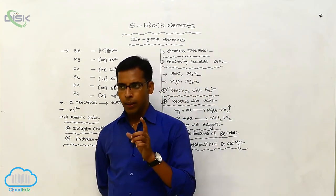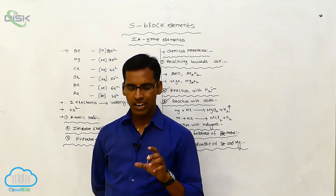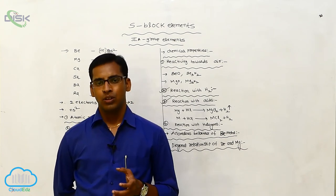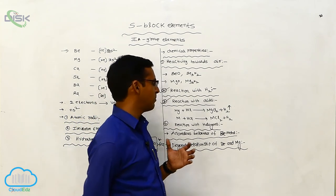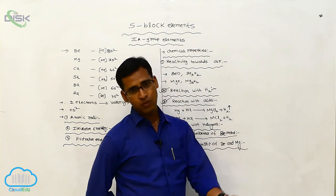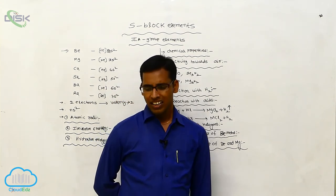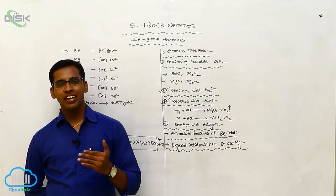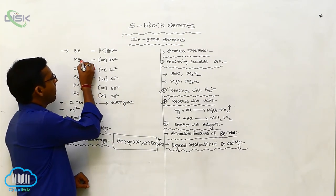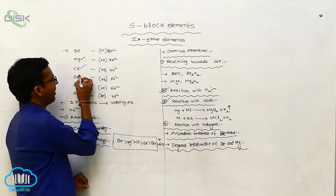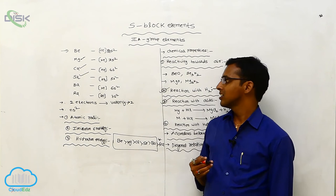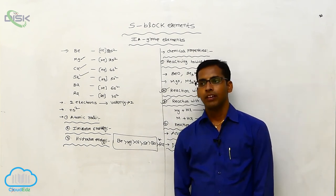Beryllium reacted with organic or inorganic compounds forms beryllate, whereas aluminum also gives aluminate — these are observable relationships between beryllium and magnesium. Additionally, beryllium easily forms crystallization substances with water, and magnesium also forms crystallization substances. This crystallization nature in Group 2A elements decreases from top to bottom — from octahydrate, to hexahydrate, to tetrahydrate — meaning the crystallization character decreases going down the group.